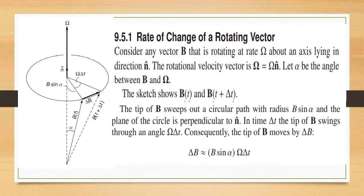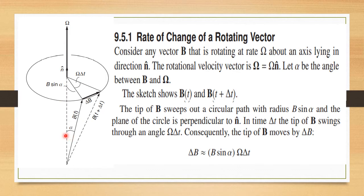In this section we will find out the rate of change of a rotating vector. We consider a vector b(t) rotating about an axis with angular velocity omega, which is the rotational velocity vector in the direction n-hat. The vector omega equals omega times n-hat, and alpha is the angle between b and omega.